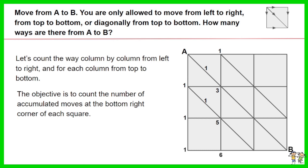For the bottom square of the left column. The accumulated moves at the bottom right corner is 6, as it includes the 5 moves from the middle square.